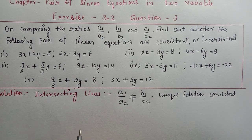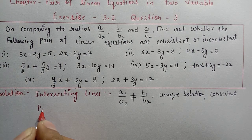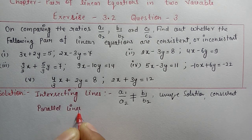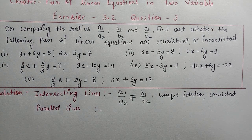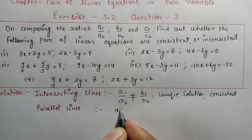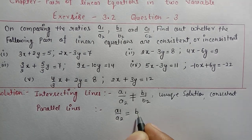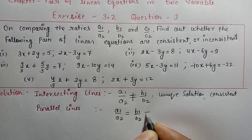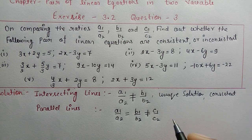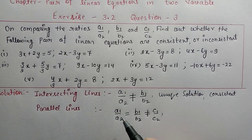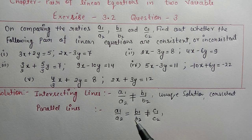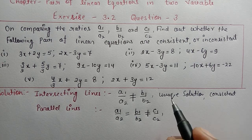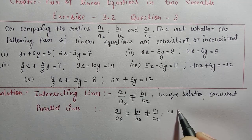Second type: parallel lines. The condition for parallel lines is a1/a2 equals b1/b2, but a1/a2 is not equal to c1/c2. The condition is that the coefficients satisfy a1/a2 = b1/b2, but this is not equal to c1/c2. In this case there is no solution.